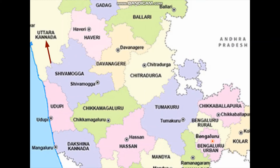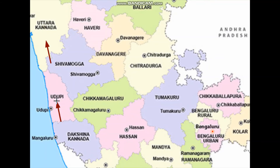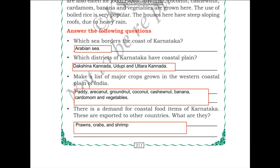We have Uttara Kannada, Udupi district, and Dakshina Kannada — below it is Kerala. So only three districts of Karnataka — Uttara Kannada, Udupi, and Dakshina Kannada — have the coastline. The major crops grown in the western coastal plain of India are paddy, areca nut, groundnut, coconut, cashew nut, banana, cardamom, and vegetables. Coastal food items including prawns, crabs, and shrimp are in great demand and are exported to other countries.